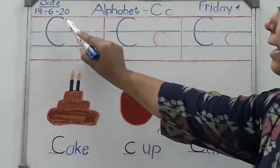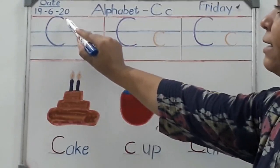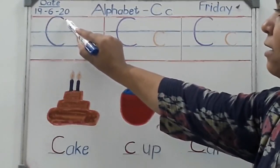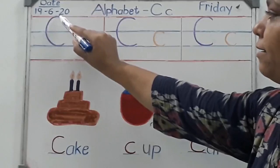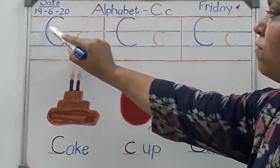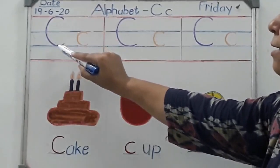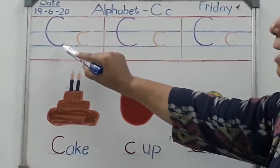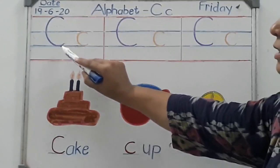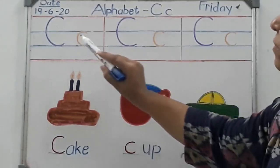To write capital C, put your pencil point slightly below the red line, then go up and touch the red line. Make a curve, go down, down, down, touch the second blue line, and go a little bit up. This is our capital C.